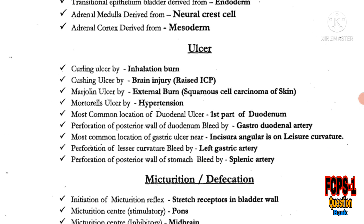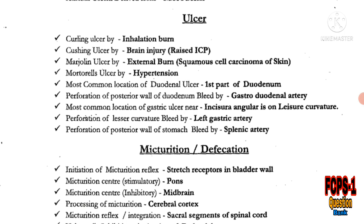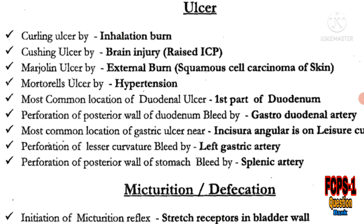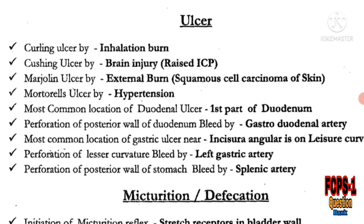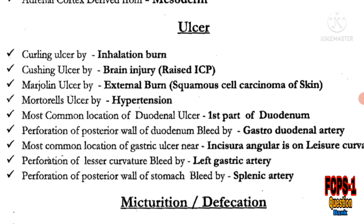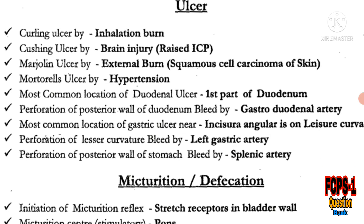Next topic is ulcers. Curling ulcer is caused by inhalation burns. Cushing ulcer is caused by raised ICP in brain injury or head injury. Marjolin's ulcer is caused by external burns — squamous cell carcinoma of the skin produces Marjolin's ulcer.